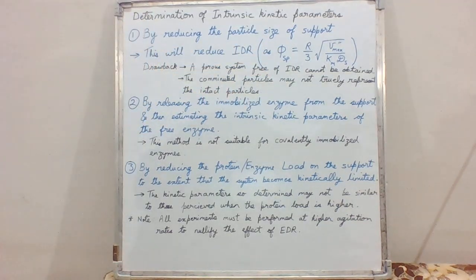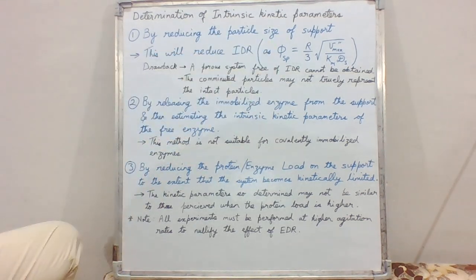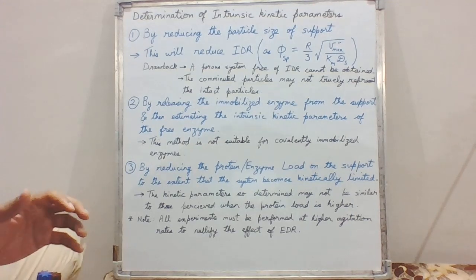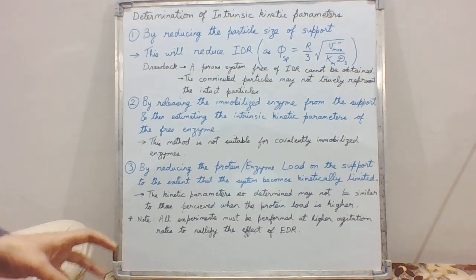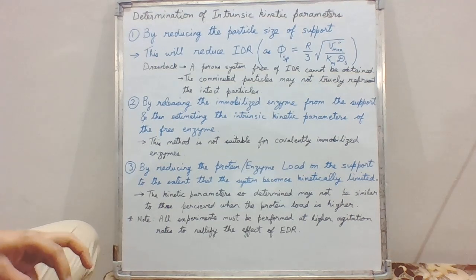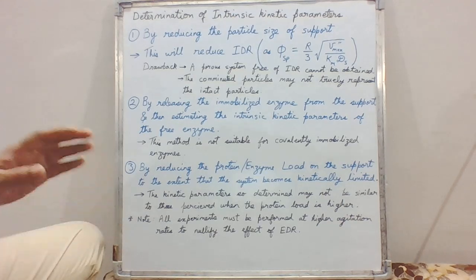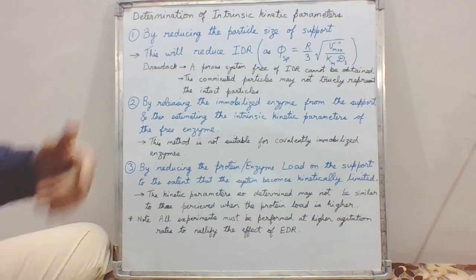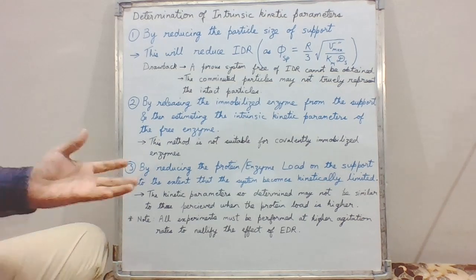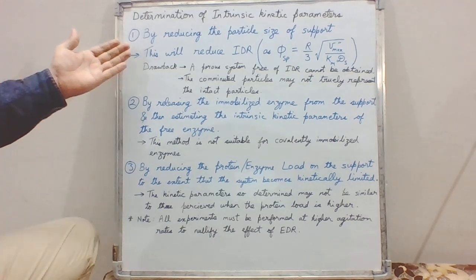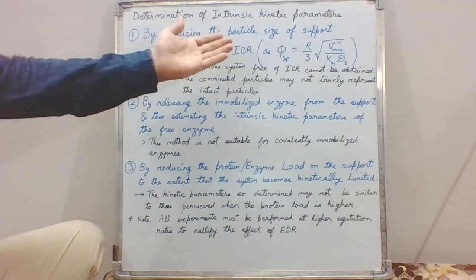So if we reduce the size of the support, we are decreasing the Thiele modulus. Practically, we can imagine that by reducing the particle size we are increasing the contact area of the support with the bulk medium, which reduces external diffusion restrictions to a very low level. This helps us in evaluating the effect of IDR on enzyme kinetics.